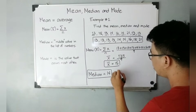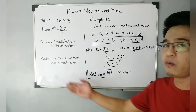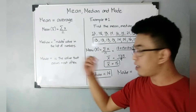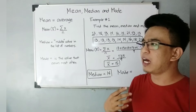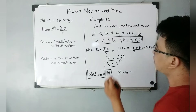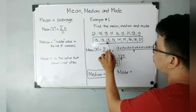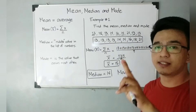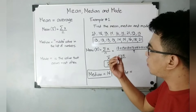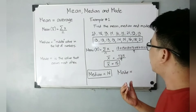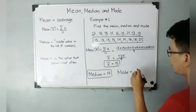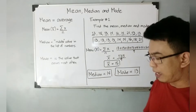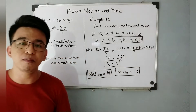Now let's move on to the mode. Mode is the value that occurs most often — the value with the most elements. Looking at the given dataset: 13 appears 1, 2, 3, 4 times. Compared to 14, which only occurred twice. Meaning the element or value that occurs most often is 13. Therefore, the mode is equal to 13. So in Example 1, we calculated the mean as 15, the median as 14, and the mode as 13.